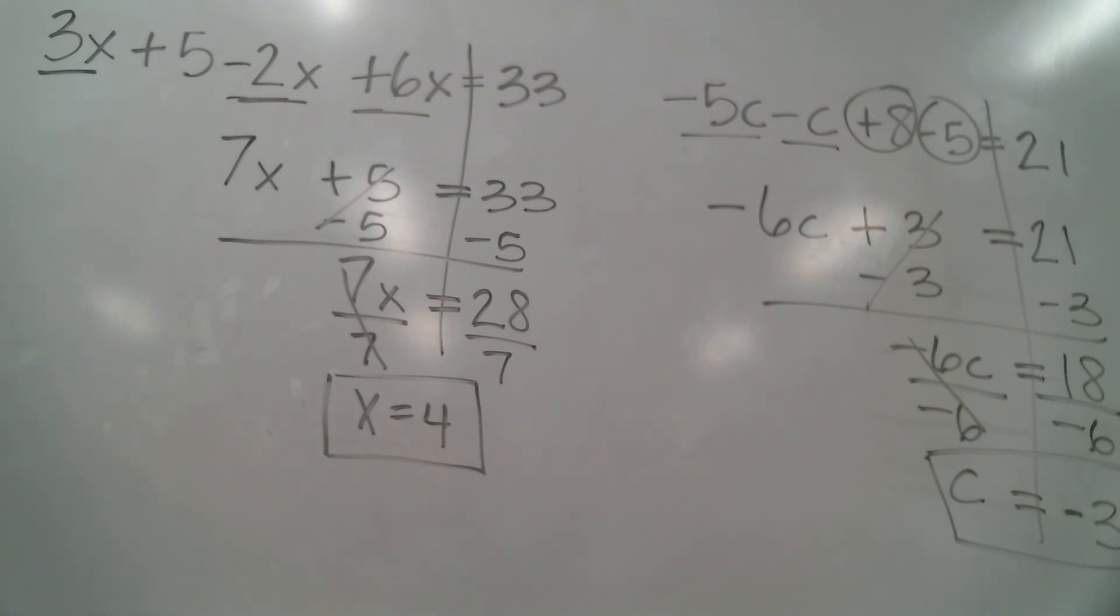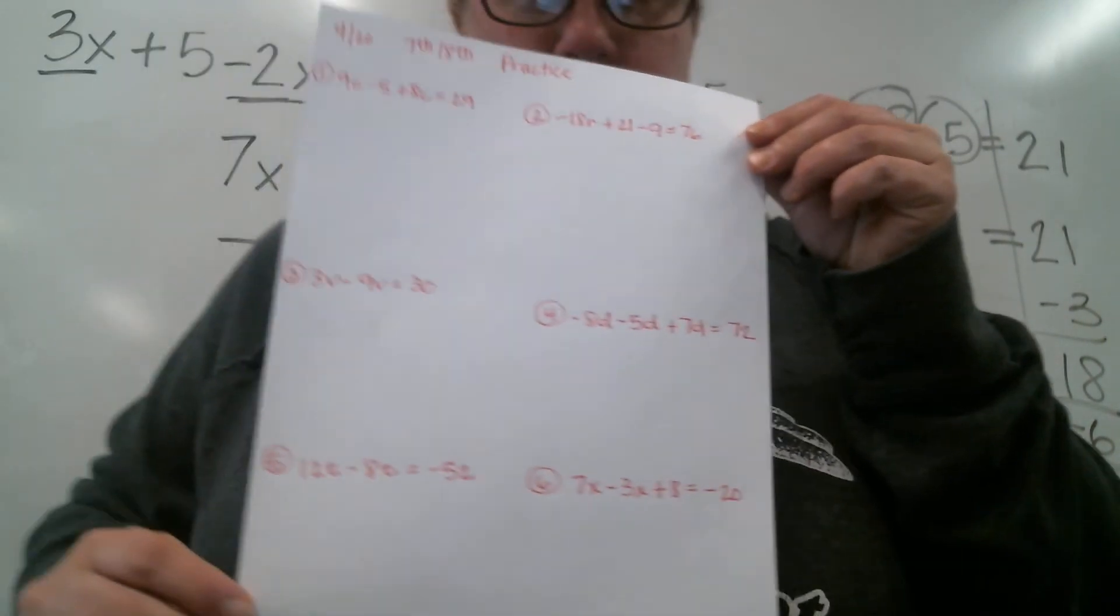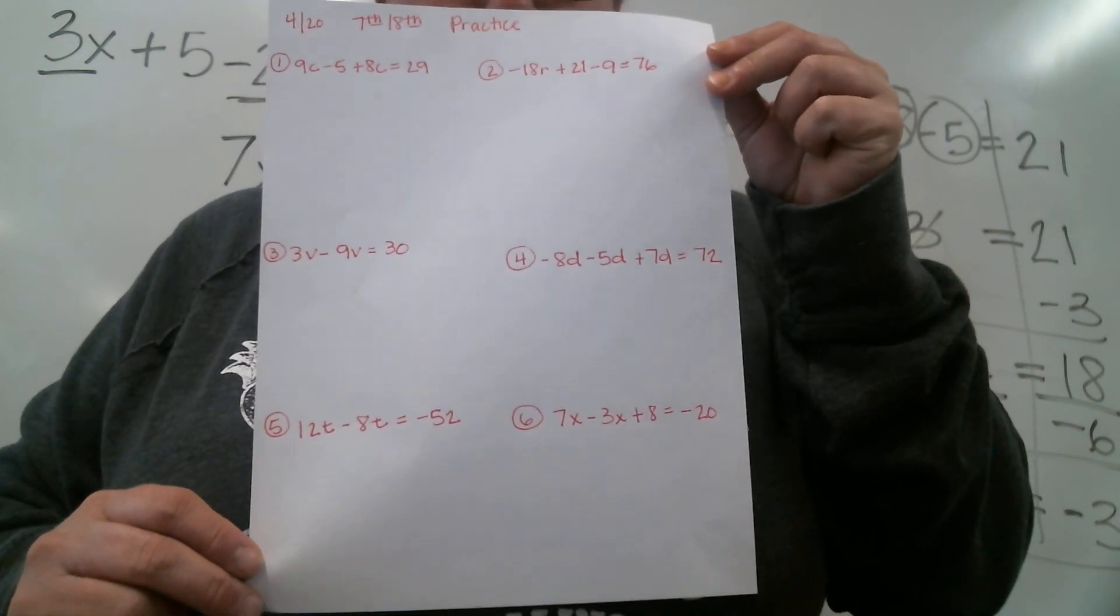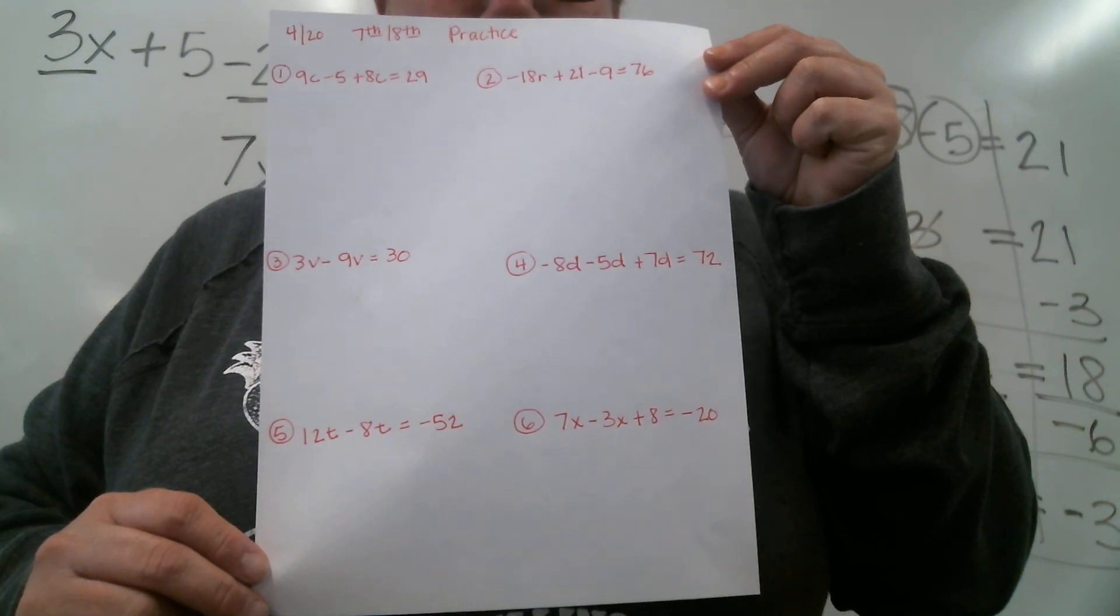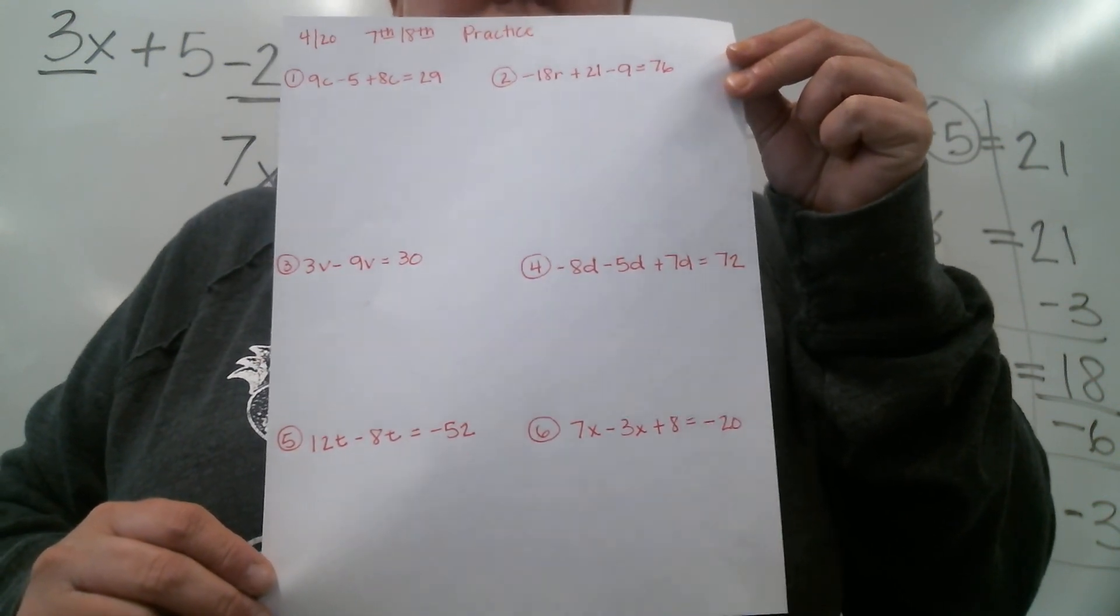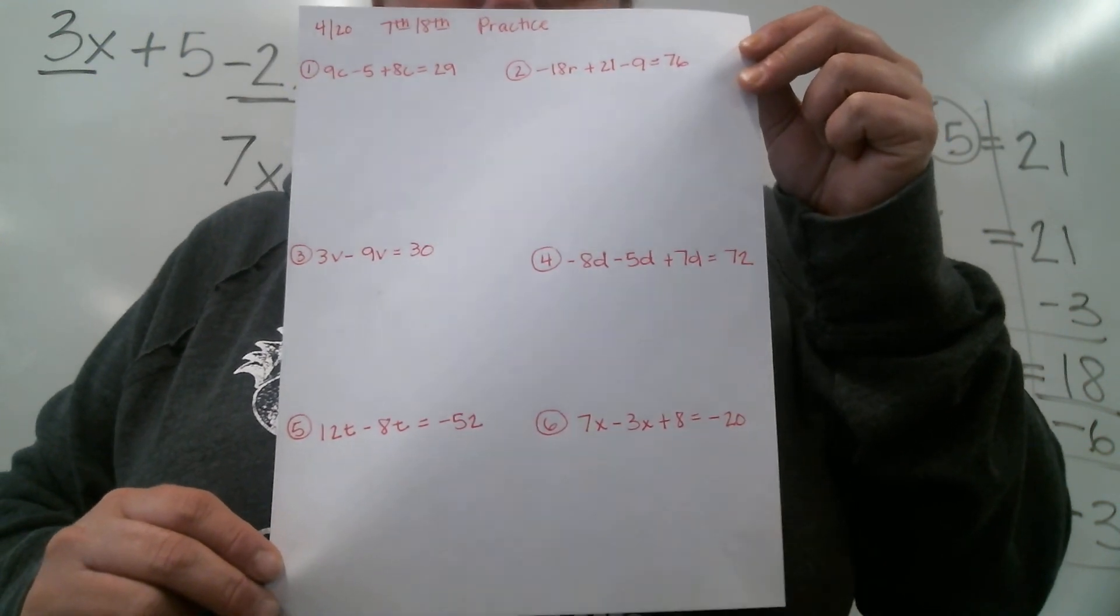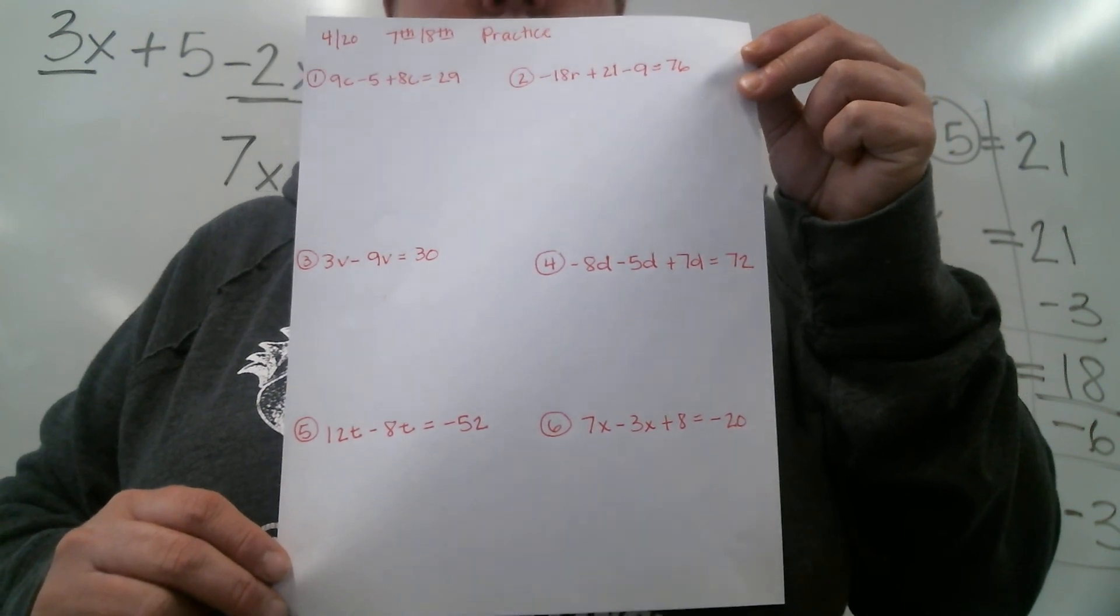So just like last week, we're just adding in one extra step which is combining like terms. When you get an equation that has like terms in it, you've got to combine those up first. Okay, let me give you some practice problems. There you go. There's 6. Just like what we just did. Okay, have a great Monday. I miss you. I'll see you back Wednesday if you would like credit for these. Turn them in by Tuesday night.